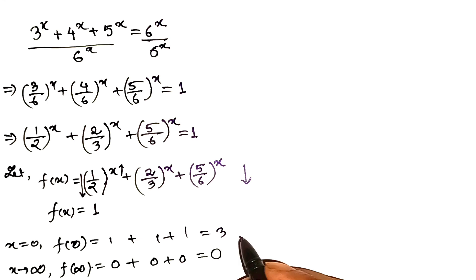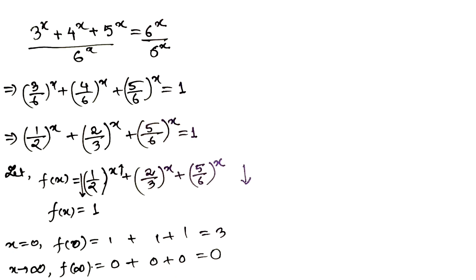So picture this. The graph starts at 3, slides down down down, eventually approaching 0, and somewhere in the middle it has to cross the line y equals 1. And because it's strictly decreasing, it crosses exactly once. That means there is a unique solution.